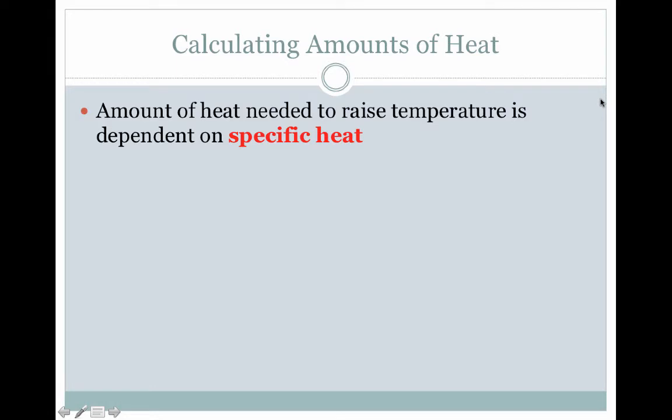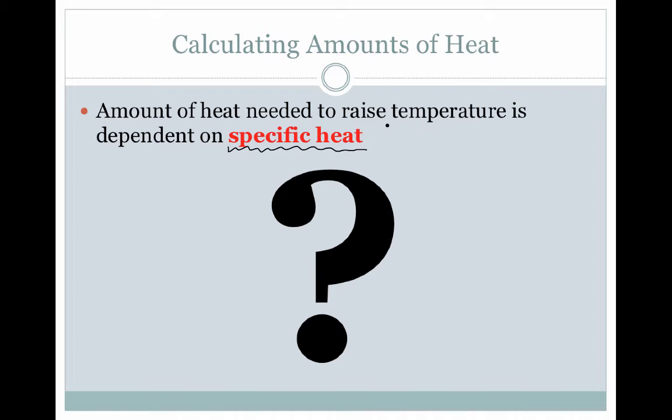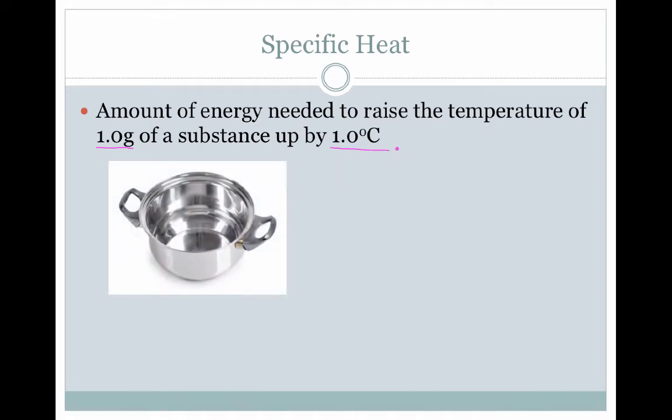Last but not least, calculating the amount of heat necessary is also dependent on a new variable, something we're not familiar with yet, something known as specific heat. Because this is not something you deal with on a regular basis, there aren't really any good examples I can show you that you would have seen. However, we can talk about this idea in the context of stuff that you've probably already done. So the definition of specific heat then is the amount of energy needed to raise the temperature of one gram of a substance up by one degree Celsius. You can take, for example, this metal pan.